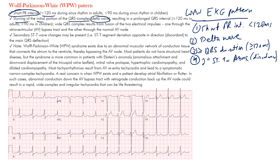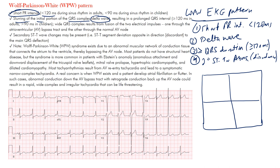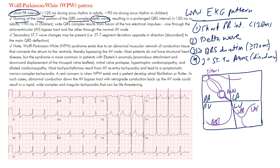There are two different types of WPW, based on where the accessory pathway is present. Let's look at the mechanism. Here's your right atrium, left atrium, right ventricle, and left ventricle. To review: our sinus node is up here, with internodal pathways coming to the AV node, a Bachmann bundle on the left side, a His bundle, and then your right bundle branch, left bundle branch with anterior and posterior fascicles.